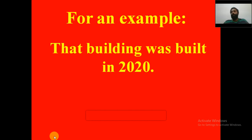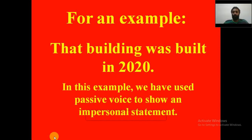In the example 'That building was built in 2020,' there is no personal connection between you and that building. We use the passive voice to make such a distant, impersonal statement. 'That building was built' demonstrates this impersonal quality clearly.